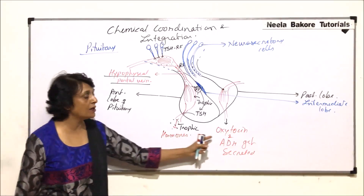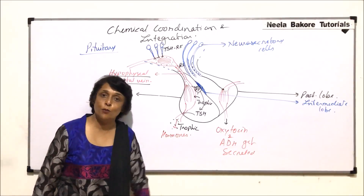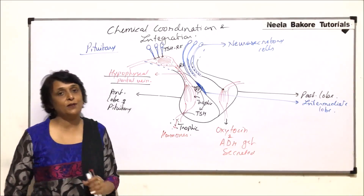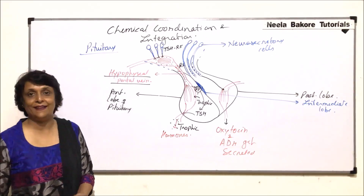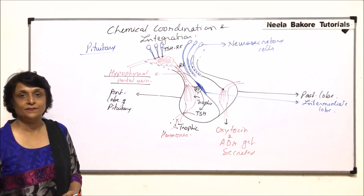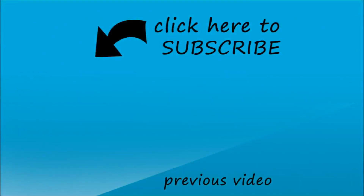Later we will talk about the trophic hormones and various types of hormones of the anterior lobe of the pituitary and their actions, as well as the posterior lobe of the pituitary and its actions.